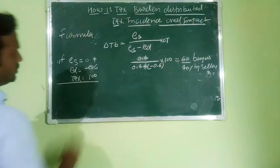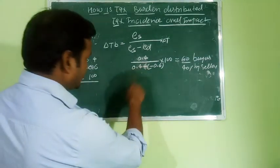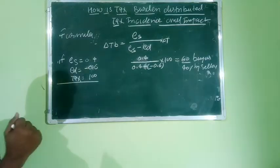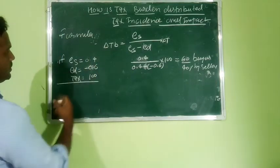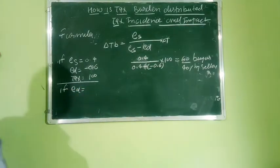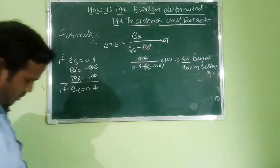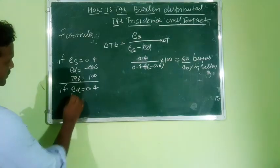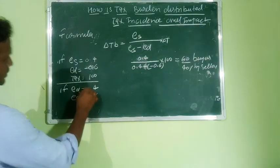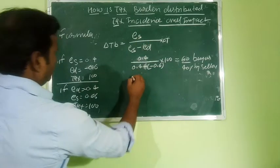So it means the incidence of tax is distributed according to elasticity of supply and demand. If supply elasticity is different, we can find who pays the tax. For example, if quantity demanded elasticity is 0.4 and quantity supply elasticity is 0.6, and tax is 100, then find the buyer's share.